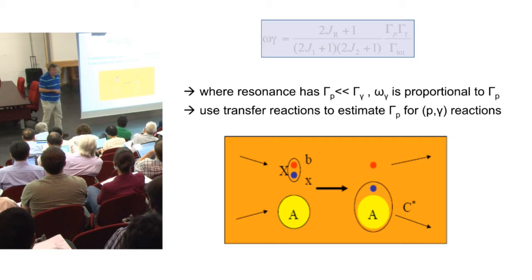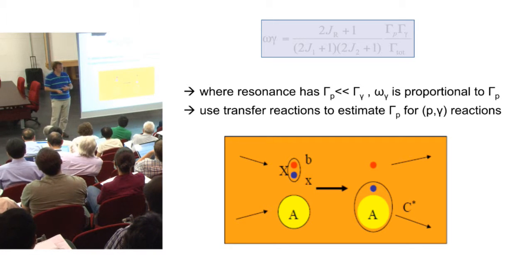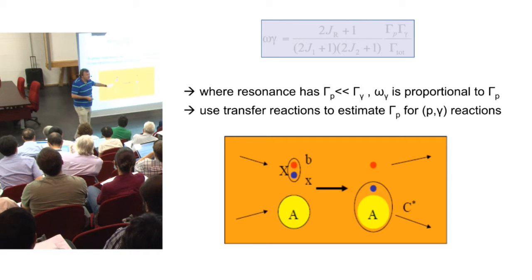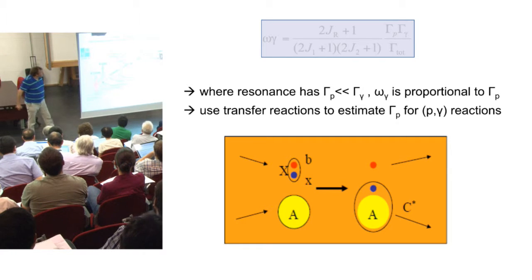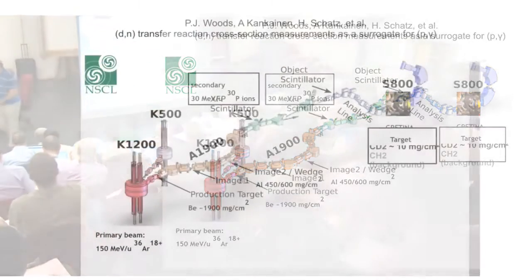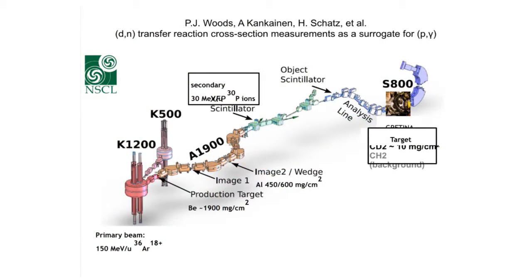That's what I call a transfer reaction — a kind of peripheral process where there's either pickup or stripping of a single particle. So I now want to tell you about a measurement we did using what we thought was a sort of new technique: to use transfer reactions as a surrogate for this particular p-gamma reaction. And if the audience is awake, they can ask me a question about what the heck that means in a moment.